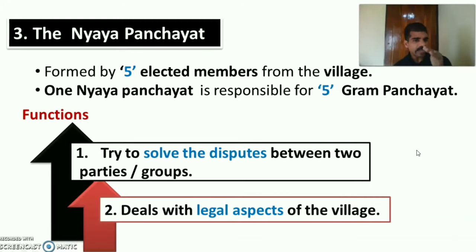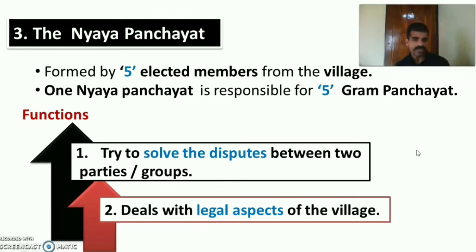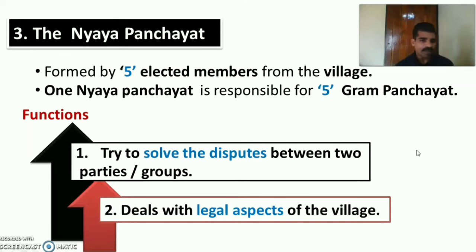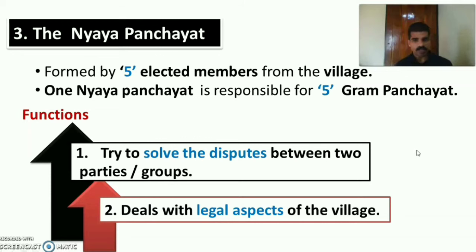The third structure is the Nyaya Panjayat. Nyaya Panjayat is formed by five elected members from the village, and one Nyaya Panjayat is responsible for five Gram Panjayats. The functions of Nyaya Panjayat are to try to solve disputes between two parties or groups of people in the Panjayat and to deal with the legal aspects of the village.